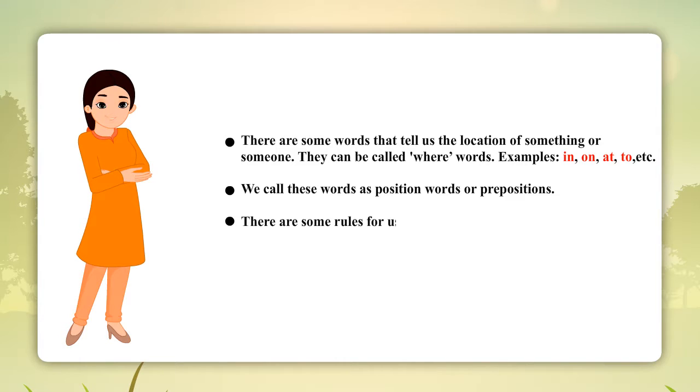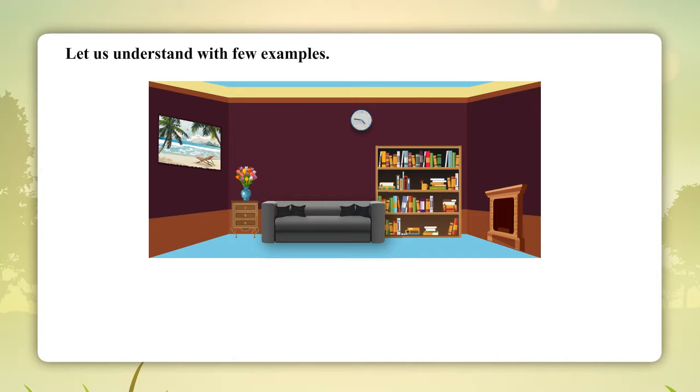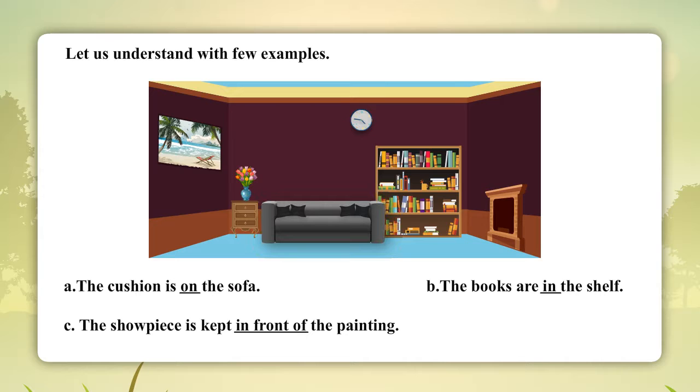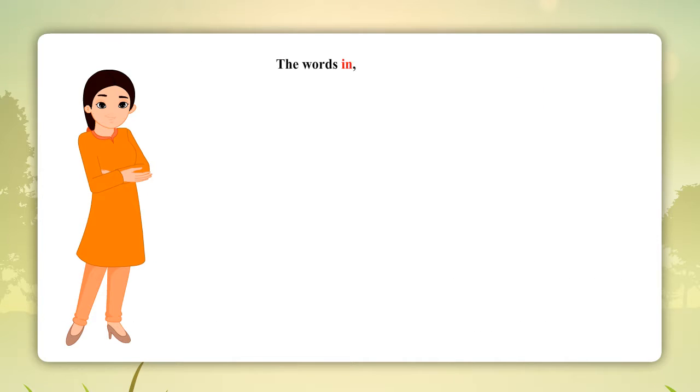There are some rules for using prepositions. Let us understand with a few examples. The cushion is on the sofa. The books are in the shelf. The showpiece is kept in front of the painting. The flowers are in the vase.